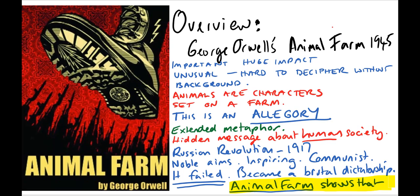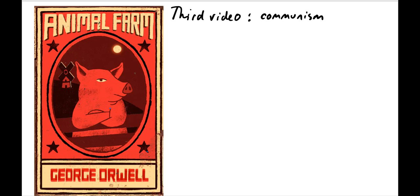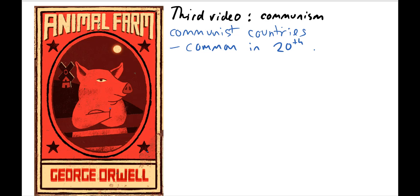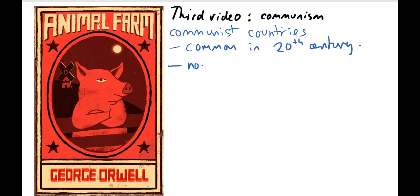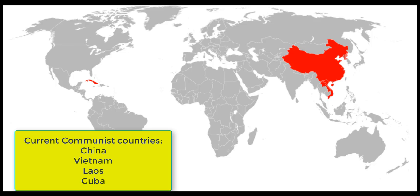Animal Farm shows that process using animals and the farm as the setting. The second video will outline the Russian Revolution, and the third video will help you understand what communism was. When I was a kid, very large parts of the world were supposedly communist — you could look at a map from the early 1980s and see around a third of the world colored red. These days there's only a handful of countries, four or five, that have governments calling themselves communist, so people are a lot less familiar with it.